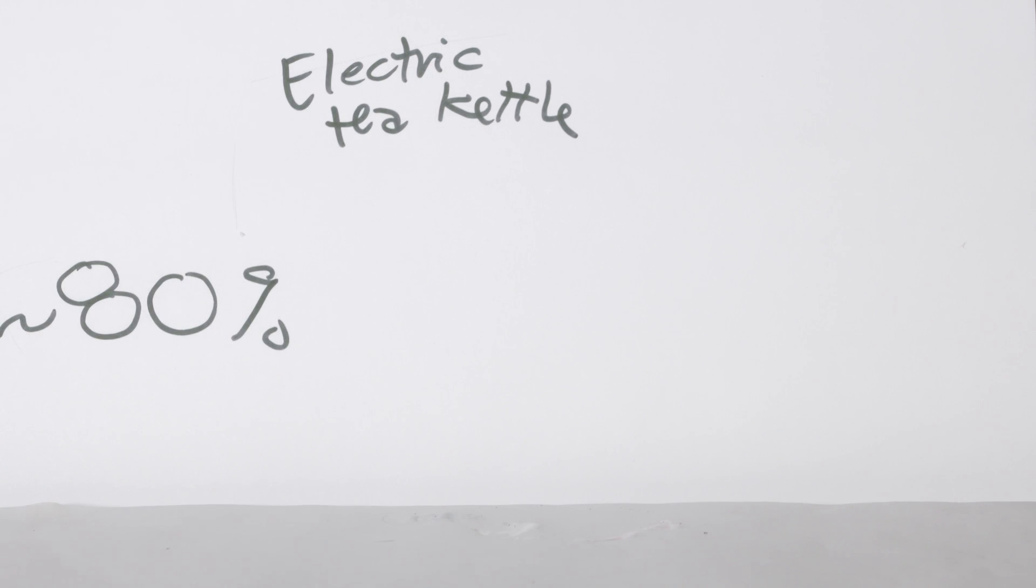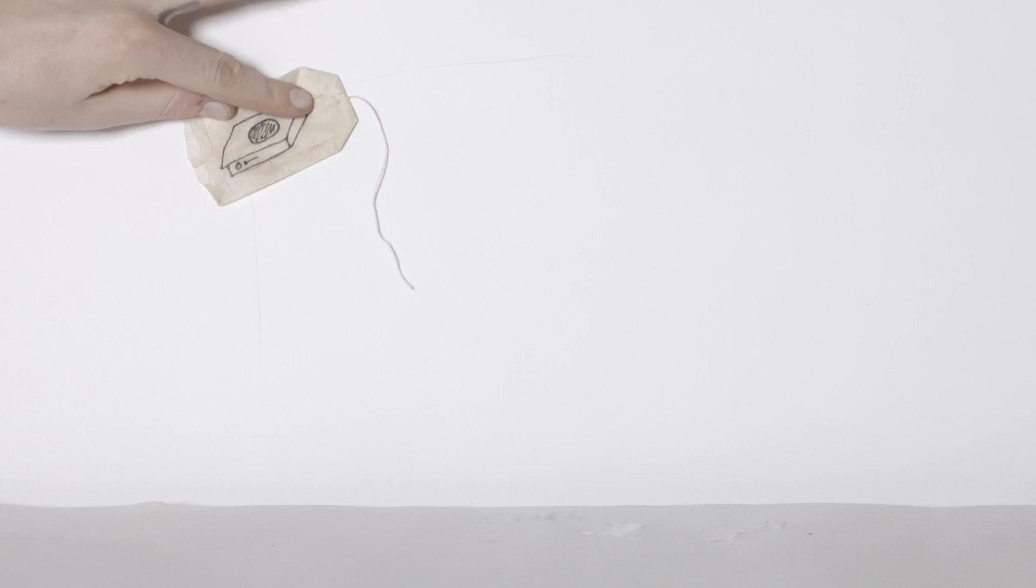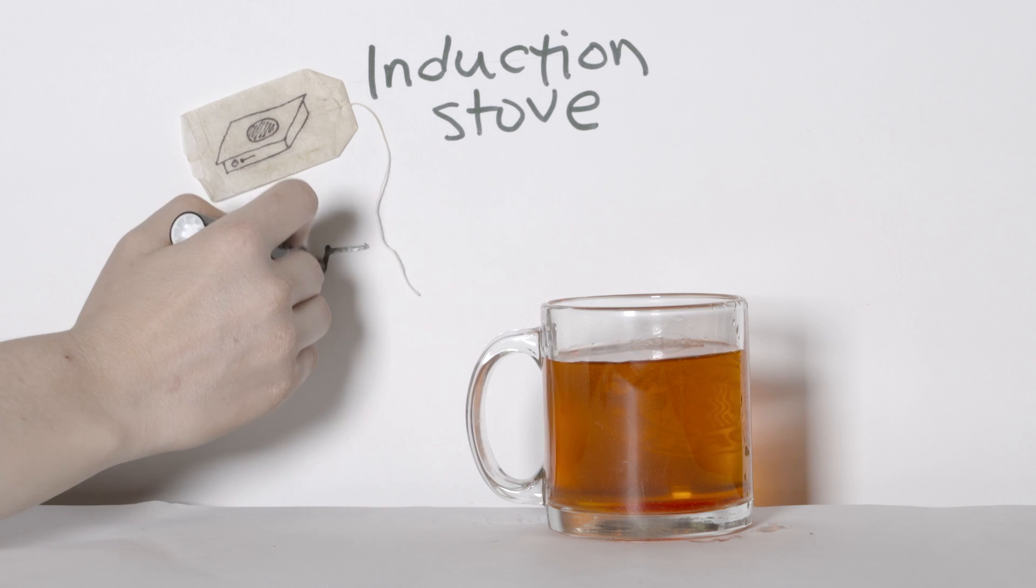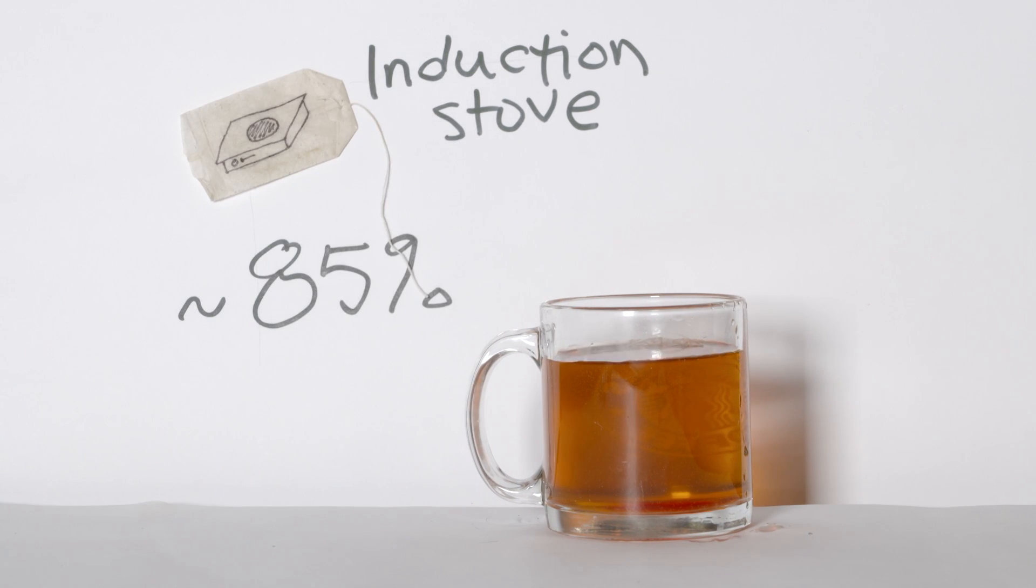That's pretty darn efficient, but we can do better. An induction stove uses an electromagnetic current to directly heat a pot, approaching a whopping 85% efficiency.